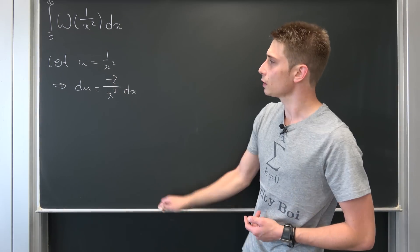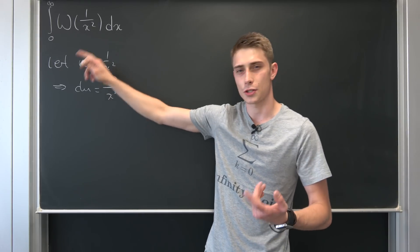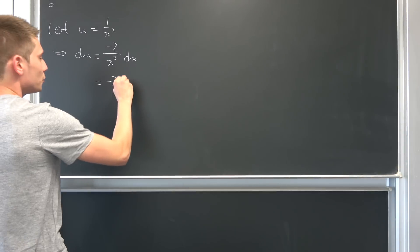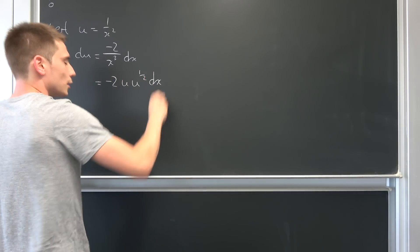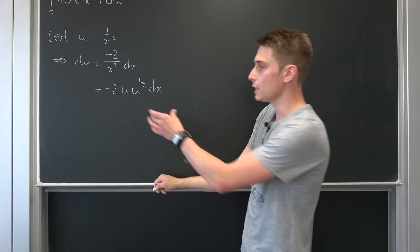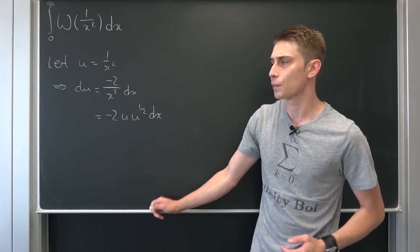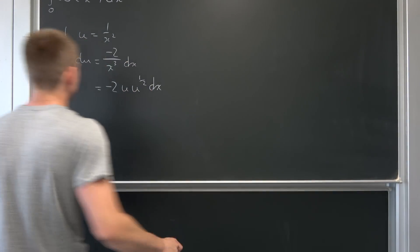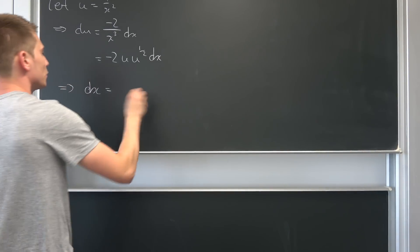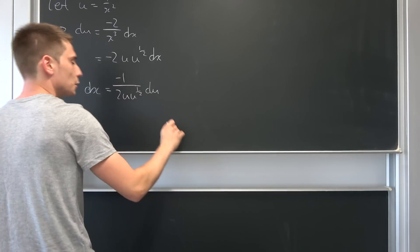And you know, 1 over x squared is nothing but u and 1 over x is nothing but the square root of u. So we can actually rewrite the right-hand side as negative 2 times u times u to the 1/2 power, dx. Now we can divide both sides by this, and I'm going to leave it as is for reasons that will become obvious in a minute. So dx equals negative 1 over 2 times u times u to the 1/2 power, du.